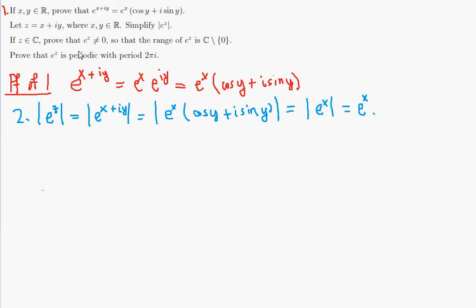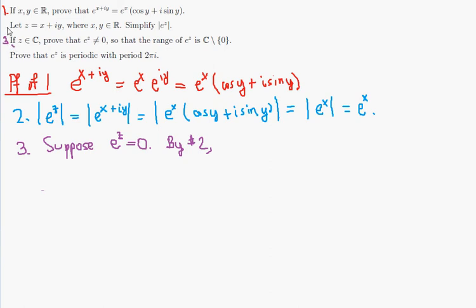Number 3: let's prove that e to the z can never be equal to 0. Well, let's suppose e to the z was equal to 0. Then by number 2, the magnitude of e to the z would be equal to 0. And we just showed that the magnitude of e to the z is equal to e to the x.